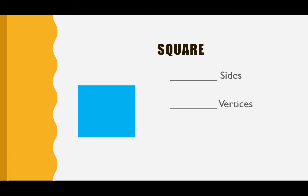The first shape that we're going to go over is called the square. Go ahead and look at this word right here — this is the word square. We're going to go over each letter: S-Q-U-A-R-E. Square. Let's say it all together: square.